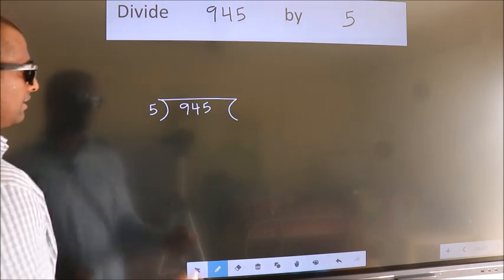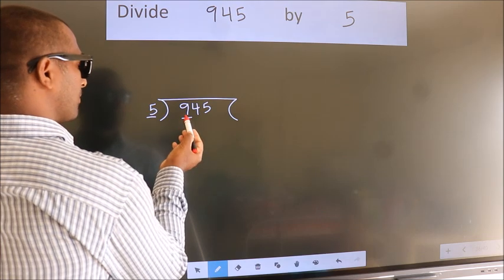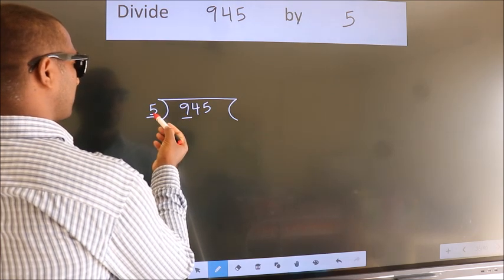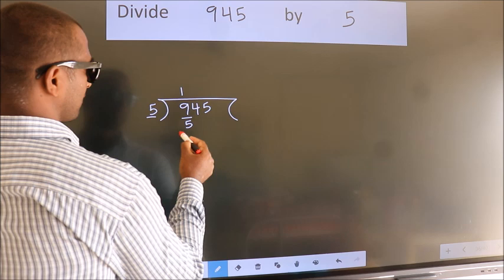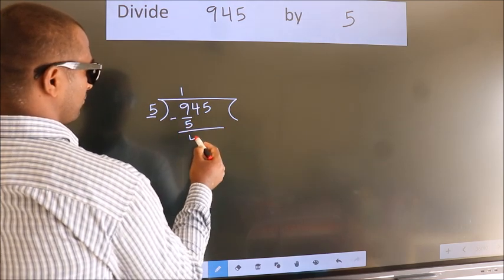Next, here we have 9, here 5. A number close to 9 in the 5 table is 5 once is 5. Now we should subtract. We get 4.